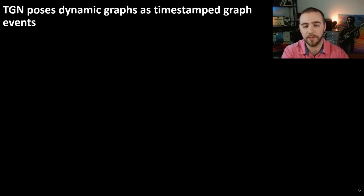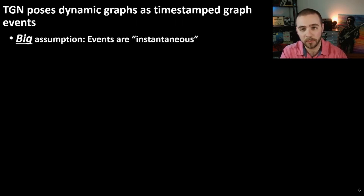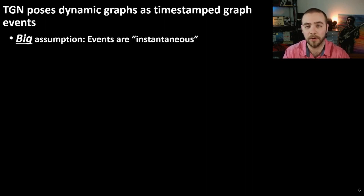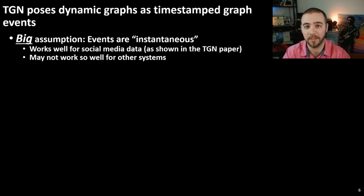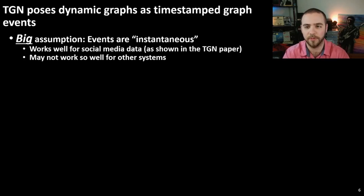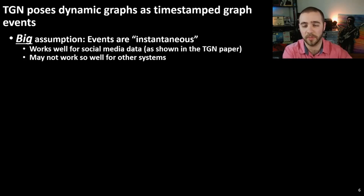The TGN paper poses dynamic graphs as a set of timestamped graph events, and they make one big assumption: that events are instantaneous. There is one single timestamp associated with each event, and that timestamp effectively captures all of the temporal dynamics of that event. As they show in their paper, this works very well for social media data — the authors worked at Twitter and also look at Wikipedia data, where interactions are users editing Wikipedia articles and each edit is associated with a single timestamp. For other systems, this may not work so well.